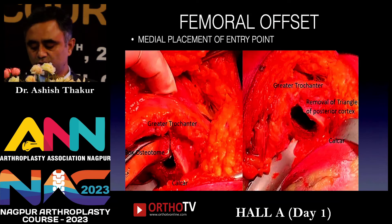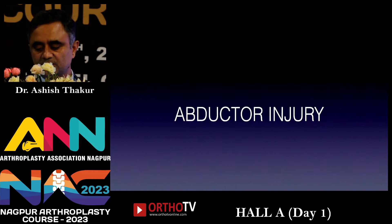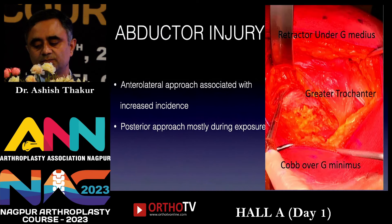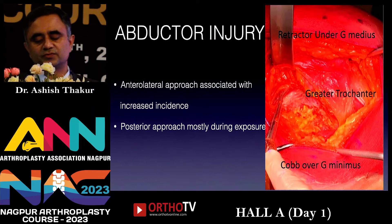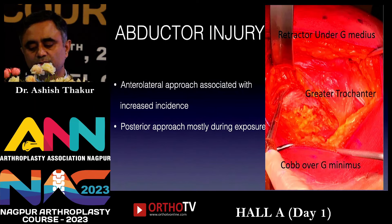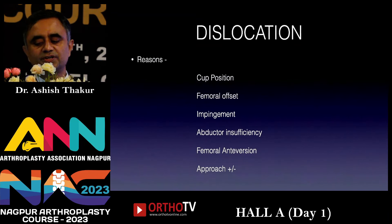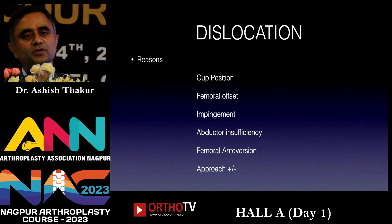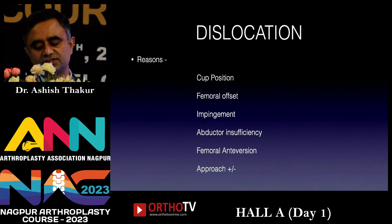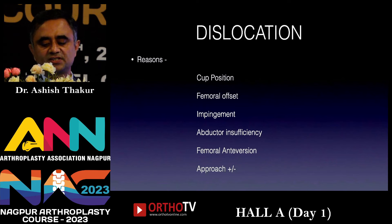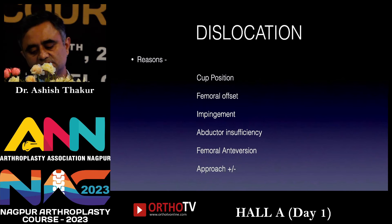Abductor injury, seen mostly with the anterolateral approach, can lead to gait changes and prolonged weakness of the abductor mechanism. In the posterior approach, it can be avoided by properly retracting the gluteus minimus from the joint capsule. Dislocation in a normal THA results from these issues in combination or isolation: cup position, femoral offset, impingement, abductor insufficiency, femoral anteversion, and the surgical approach used.